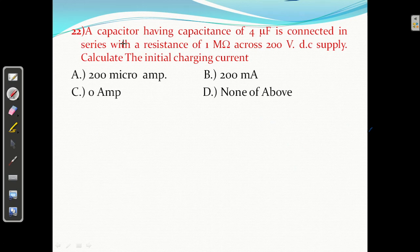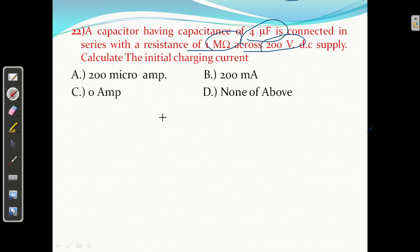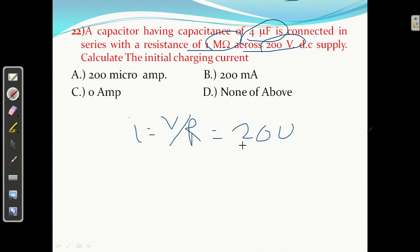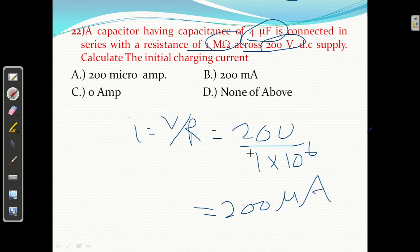Question number 22: a capacitor having capacitance of 4 microfarad connected in series with resistance of 1 mega ohm across 200 volt DC supply. Calculate the initial charging current. Initial current is maximum at the start and then decreases. So I equals V/R equals 200 upon 1 mega ohm equals 200 upon 10 raised to power 6, which gives 200 microampere.